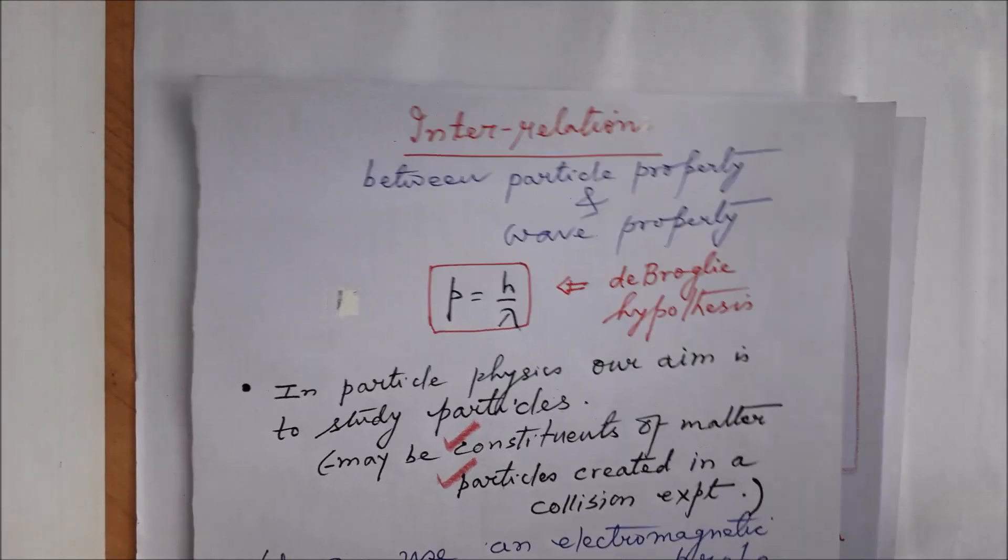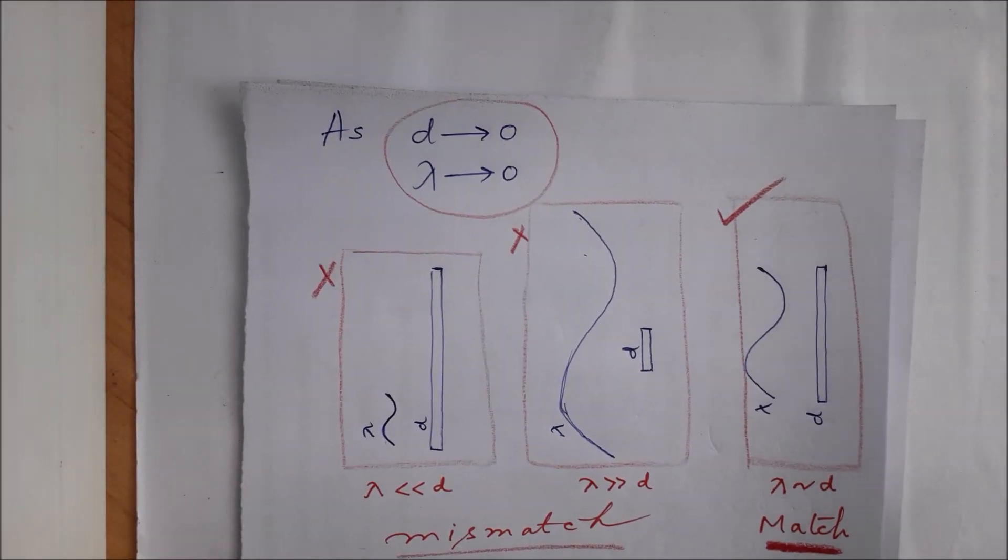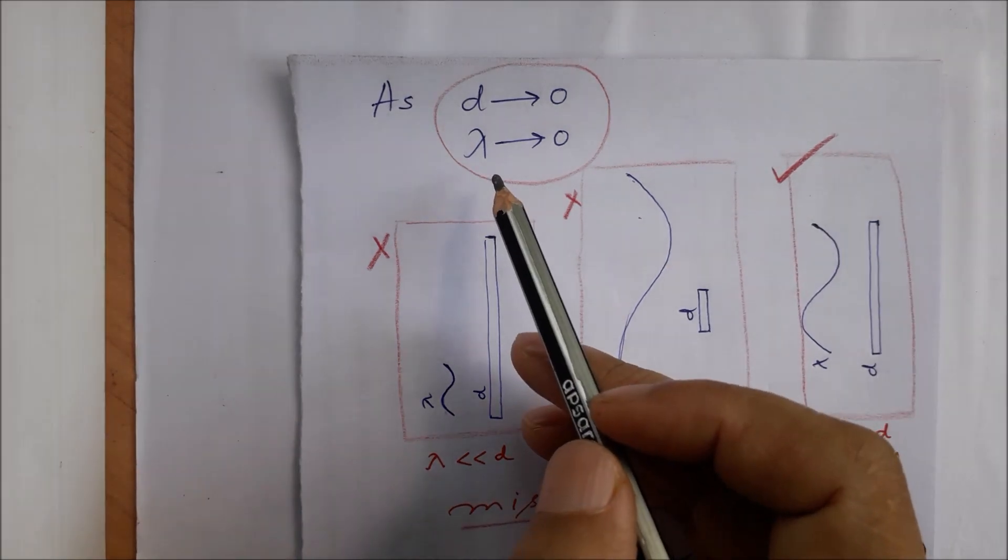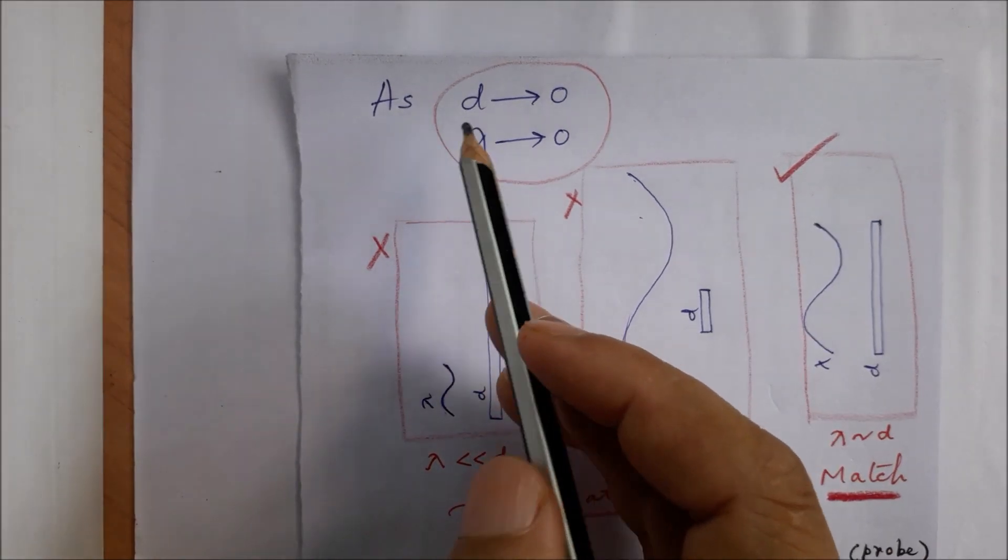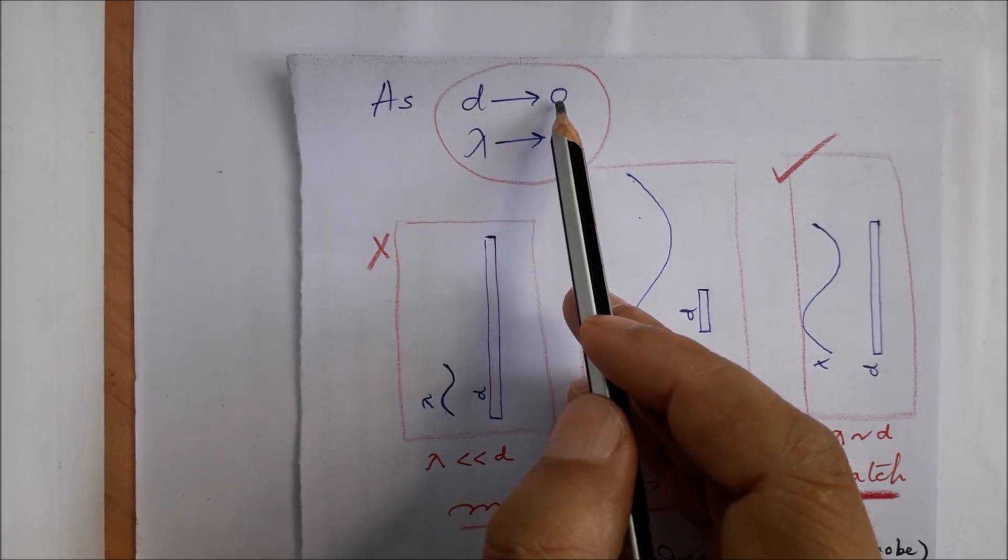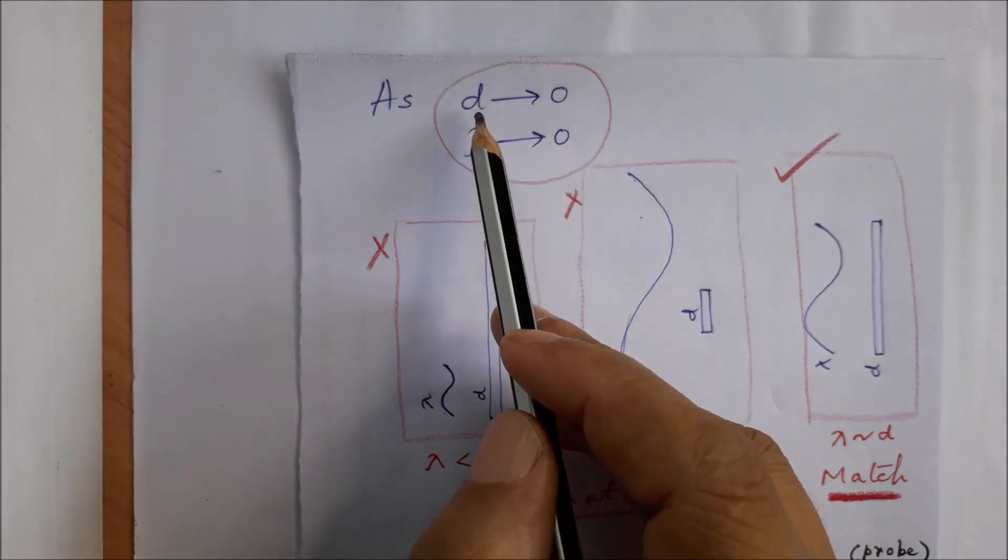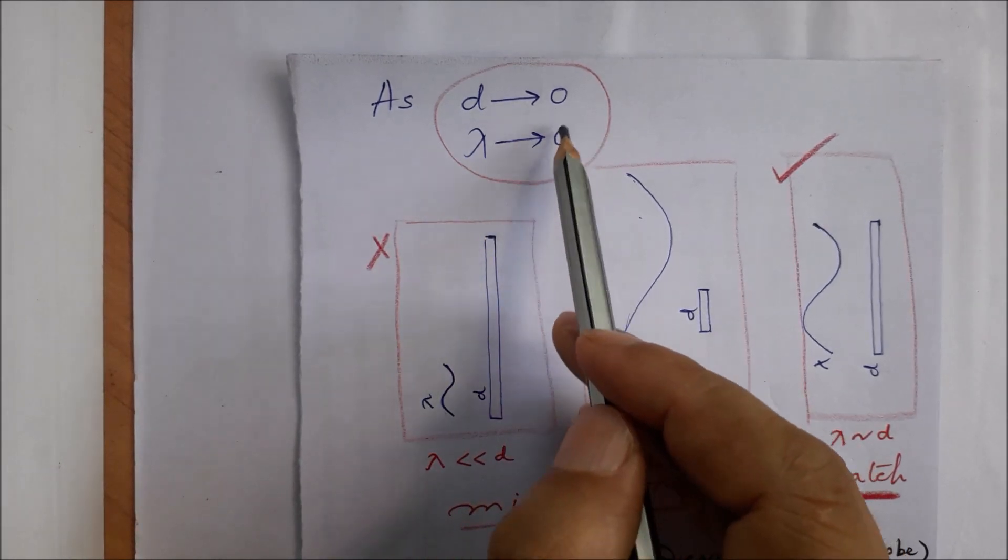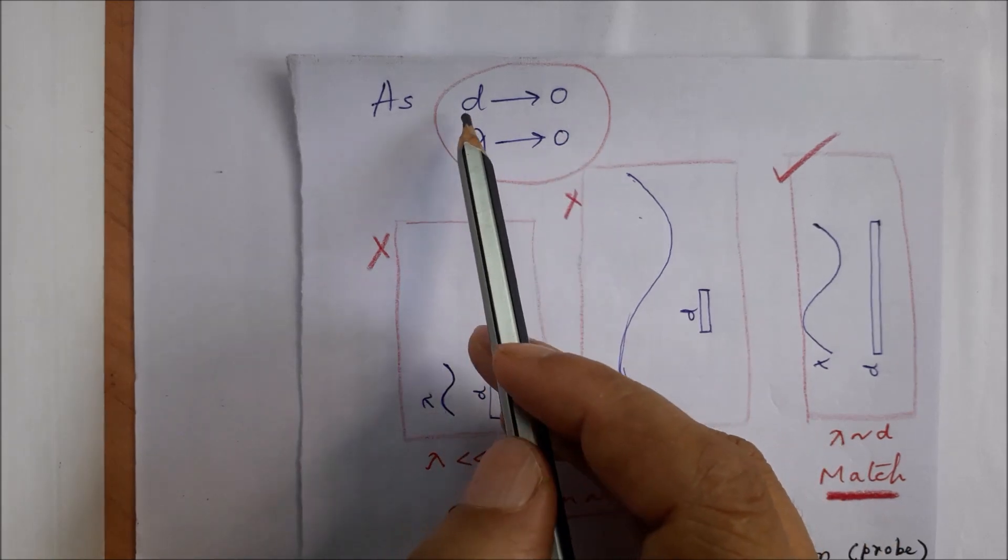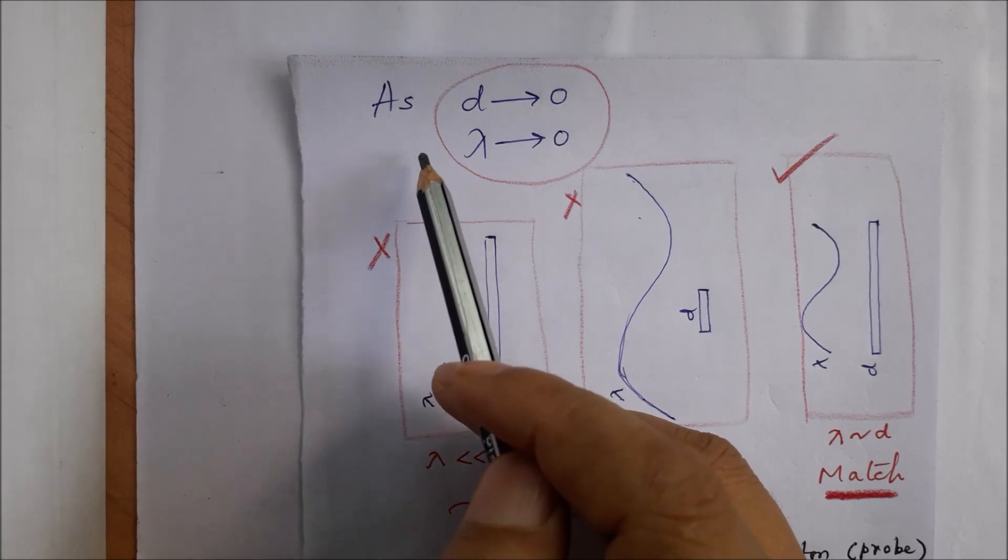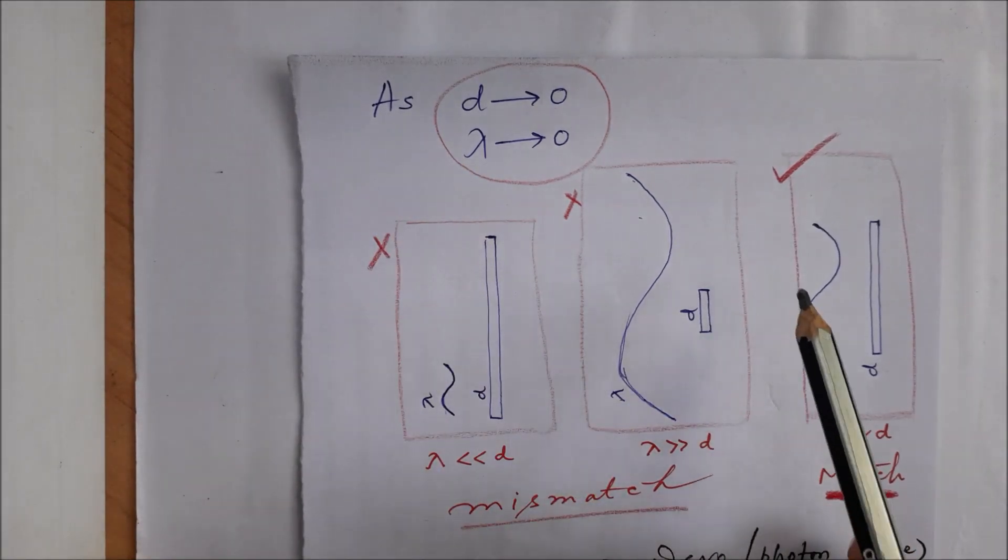Let us elaborate this point. Now since the dimension of the system—that is, particle to be investigated—is very close to zero, very small, the dimension of the investigating agency has also to be very small, should also be very small. Here λ represents wavelength of the probe. Probe means investigating agency. Let us consider three cases.